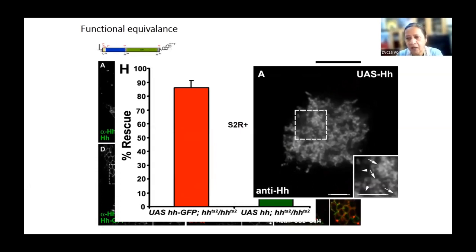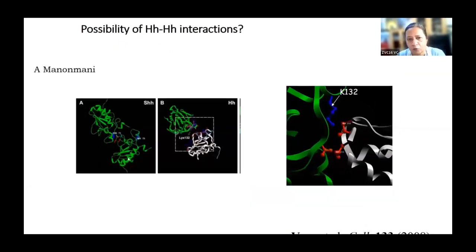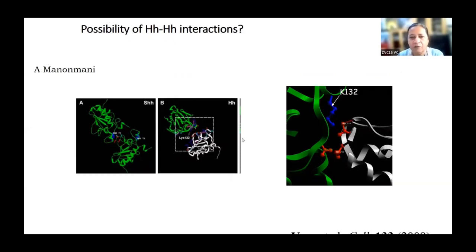Then our role began: they asked whether we could model the oligomeric form of hedgehog. We started with the sonic hedgehog crystal structure and homology modeled Drosophila hedgehog. This was done by Manonmani in my group, who was a junior research fellow at the time. She then performed protein-protein docking — hedgehog docked with hedgehog — to begin appreciating how the dimeric arrangement would look. In those days, objective scoring criteria like PPCheck Doc Score had not been established, so we were left with a hundred poses.